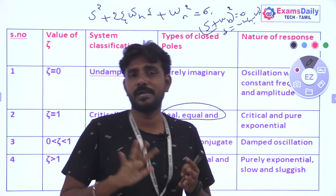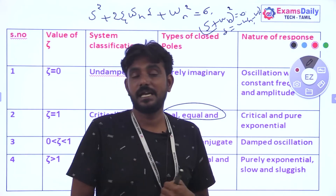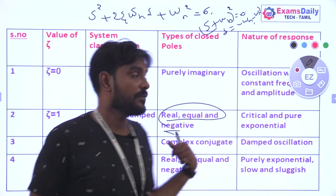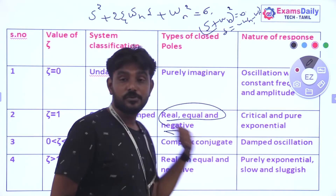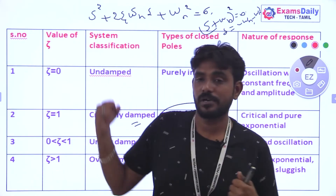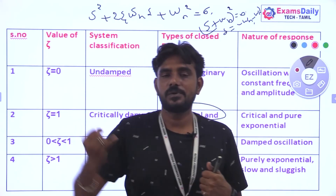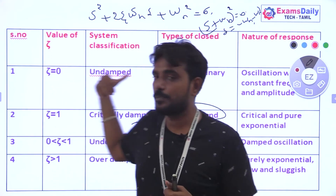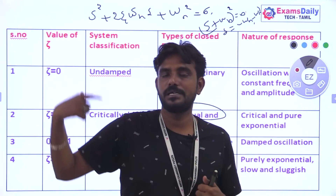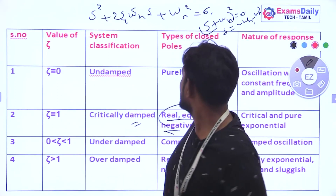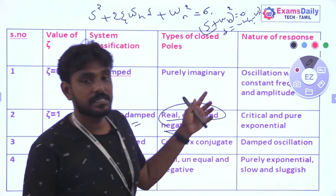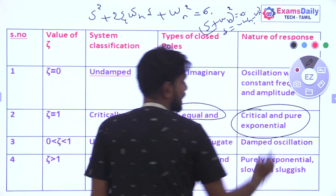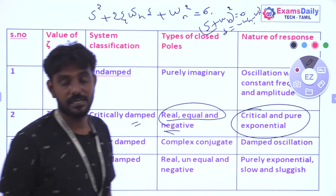Most control systems should be underdamped. When answering MCQ questions, you may be asked to identify whether a system is underdamped or overdamped, find the location of the poles, or determine the nature of the response. Please take a screenshot of this summary table for reference.